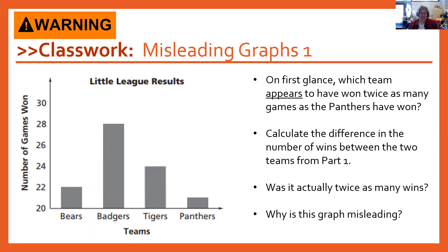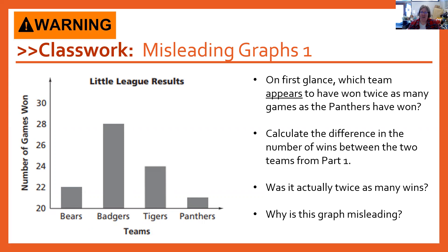The answer is no, it was not twice as many wins — it's just an increase of one. So why is this graph misleading? This is another trick that can be done with the axes of a graph. Rather than distorting the change as you go along the scale, they just started the graph at 20. So rather than starting at zero, they started at 20, which is what makes those two bars appear to be one twice as tall as the other.